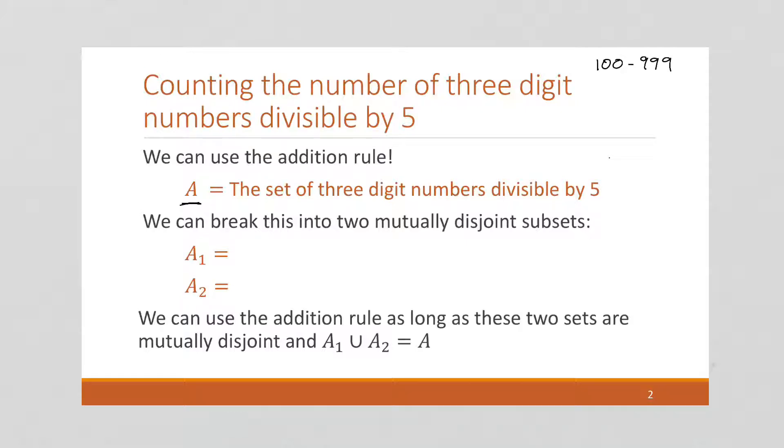Well, it either ends in a 0 or it ends in a 5. So this is the set of all three-digit numbers ending in 0. And this is the set of all three-digit numbers ending in 5.